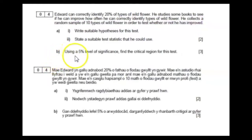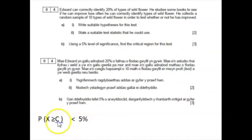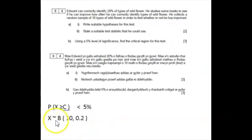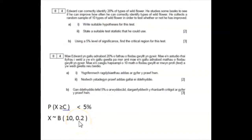Part B: using a 5% level of significance, find the critical region for this test. We need to find the number C such that the probability that X is greater than or equal to C will be less than 5%. X follows the binomial distribution where n equals 10 and p equals 0.2.